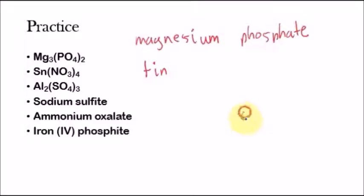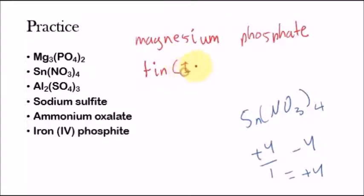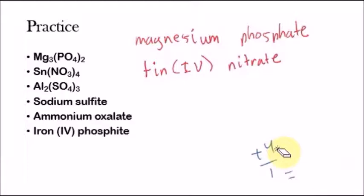Let's find the oxidation state of tin. Nitrate has a charge of minus one. Since there are four nitrates, there's a minus four charge total. That has to be balanced out with a plus four charge — there's only one tin, so plus four divided by one equals plus four. The tin has a charge of plus four. So we write tin with the Roman numeral: tin(IV) to specify the oxidation state. Then we name the polyatomic ion: nitrate. So the name is tin(IV) nitrate. If this didn't make sense, go watch the lesson on oxidation states.